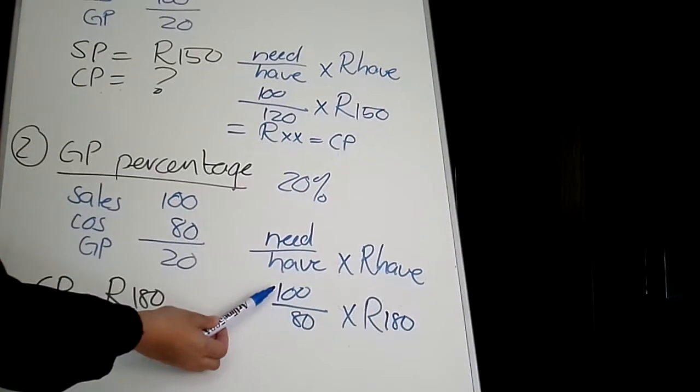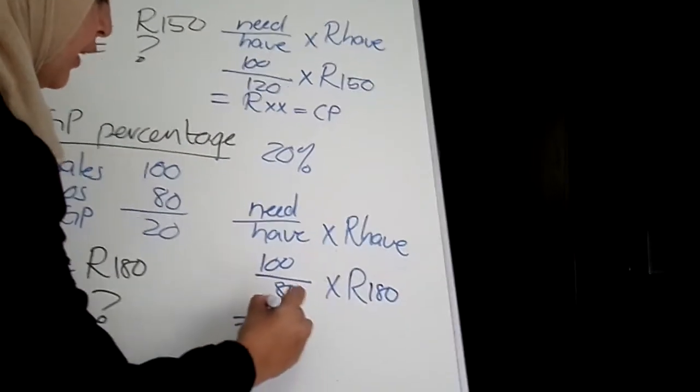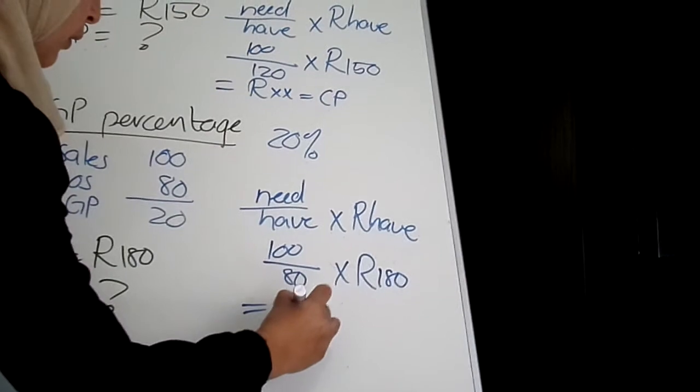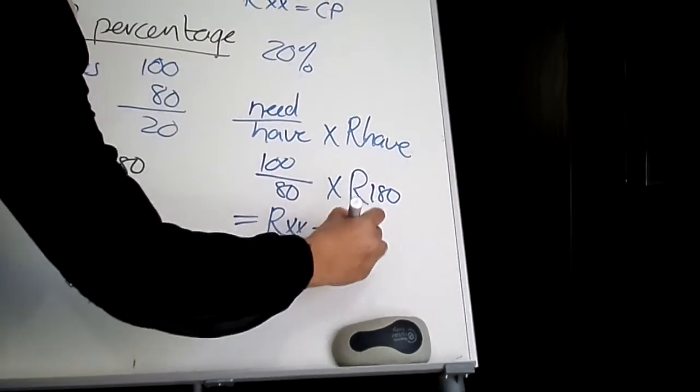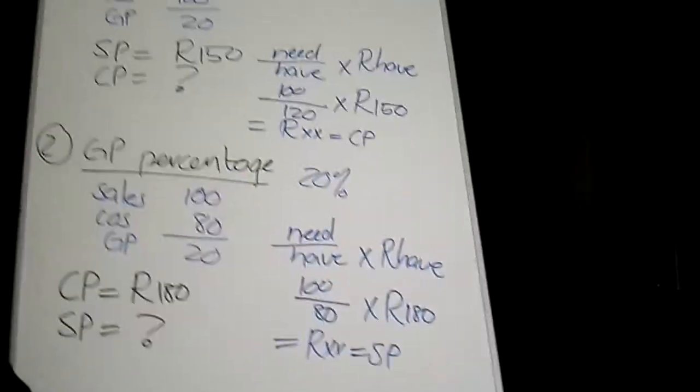So now you'll say 100 over 80 multiplied by R180. It will give you the Rand value of your selling price.